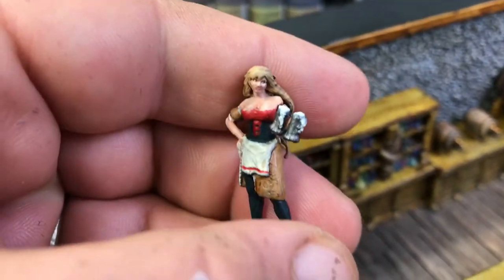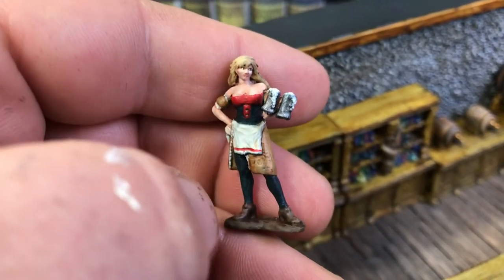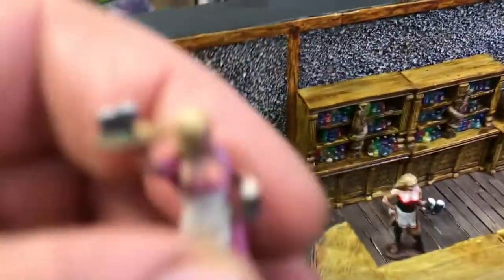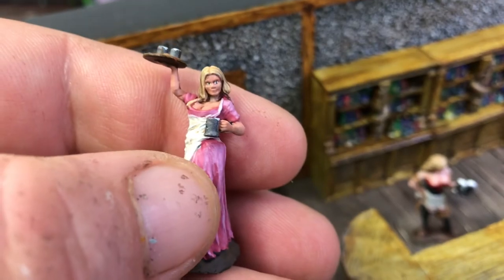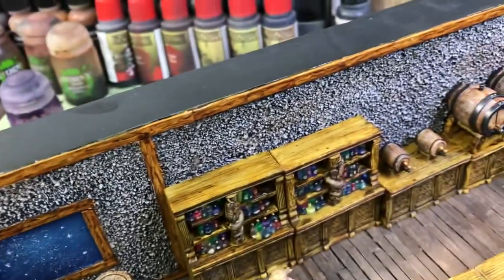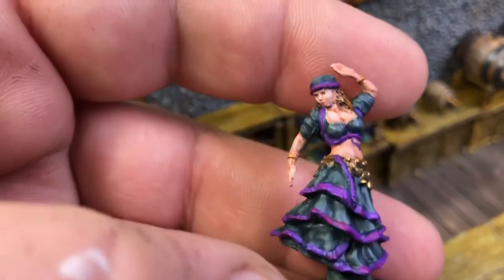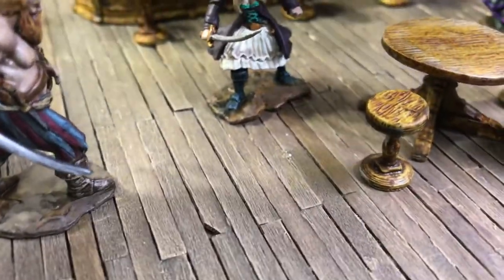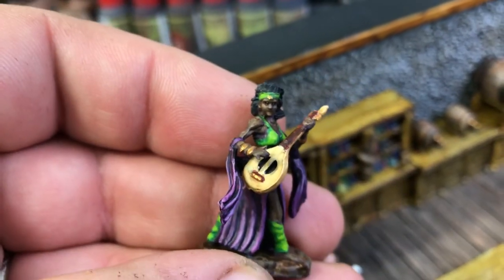Here we'll take a look at the bartender - I'll be doing a tutorial on this one as well. Here's the serving girl who I painted on Twitch. You can go back on my previous streams and check that out. Here we've got the dancing girl which I've already done the tutorial video for. And here's our female bard - there's a tutorial coming up for this one too.